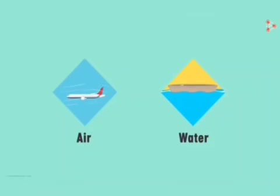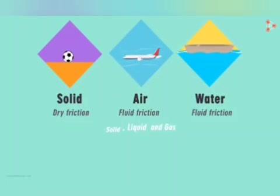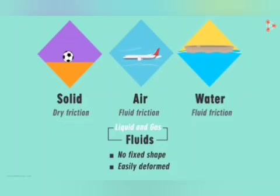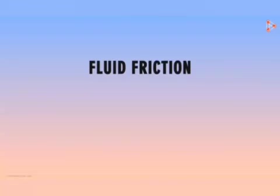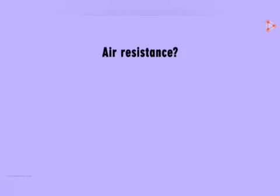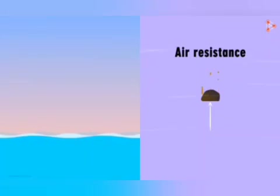Friction is not necessarily only between solids. Fluids like air and water offer friction as well, and this is referred to as fluid friction. The friction between solid parts is called dry friction. The major states of matter are solid, liquid, and gas — liquids and gases are generally referred to as fluids. One common characteristic of fluids is that they have no fixed shape and can be easily deformed. Just like solids, fluids exert a force of friction when objects move through them. When a stone is dropped, air offers resistance. When fish swim, they encounter fluid resistance from water.